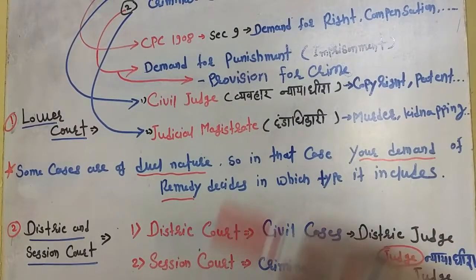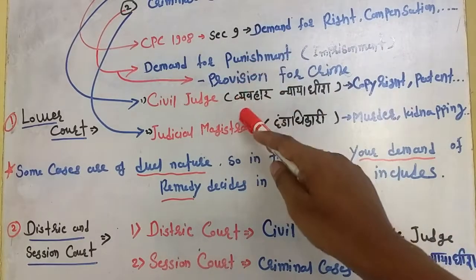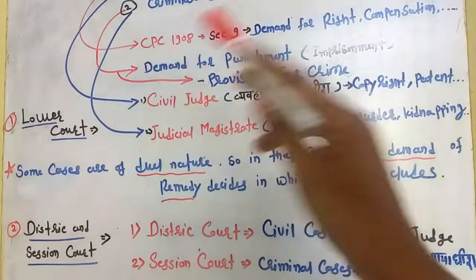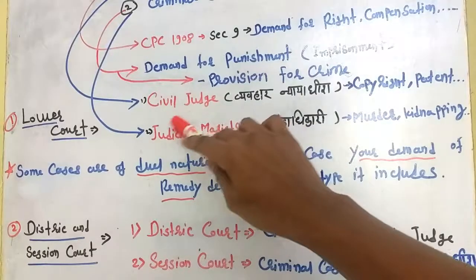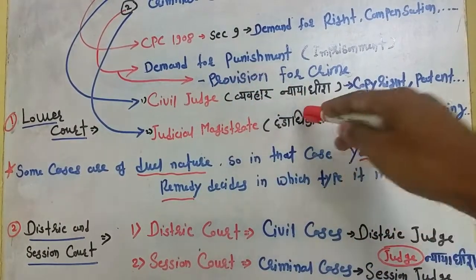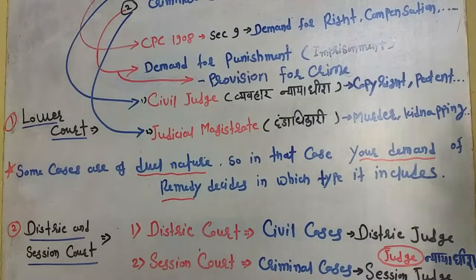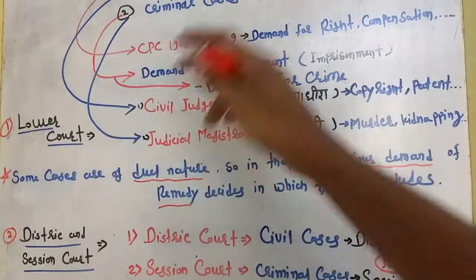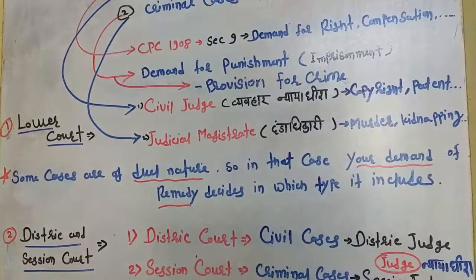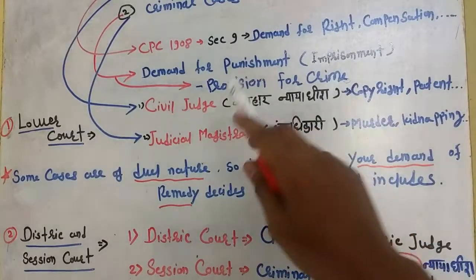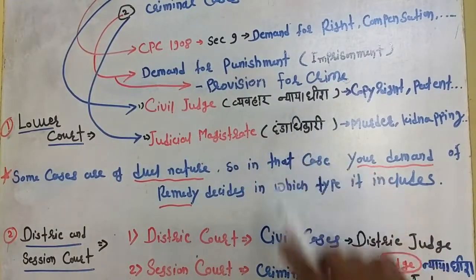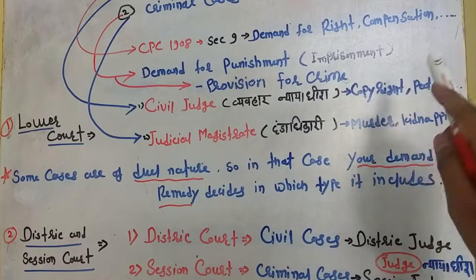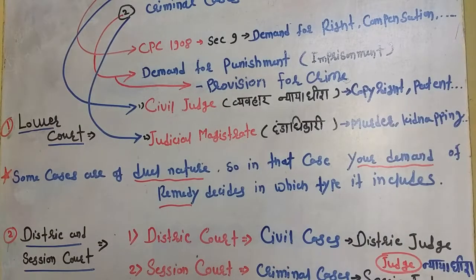If you have a civil case in the lower court, then it will be filed in the civil court, and the presiding officer who decides it will be called the judge — specifically the civil judge, known in Hindi as 'diwani nyayaadhish'. If you have a criminal case in the lower court, then it will be heard by the judicial magistrate, who handles cases like murder, kidnapping, and robbery.